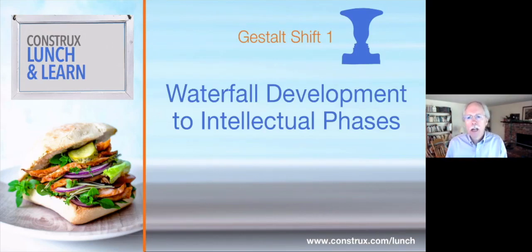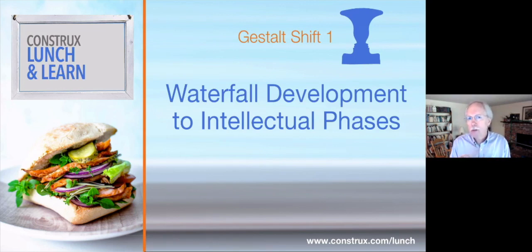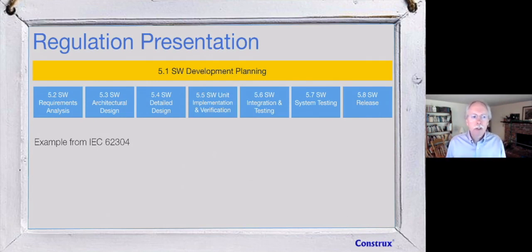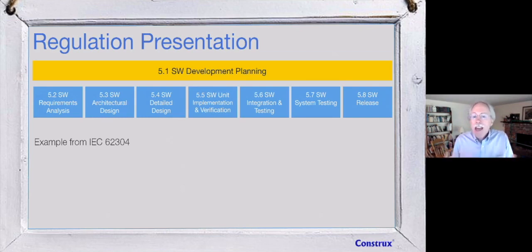Let's look at gestalt shift number one. The gestalt shift is looking at the same reality but seeing it slightly differently. The idea is: do we really see waterfall development in our regulations? Can we make a gestalt shift to seeing intellectual phases? I'm using IEC 62304 as an example. This regulation is presented with a whole overall planning diagram listing all the work that has to get done, with equal-sized numbered boxes — 5.2, 5.3, 5.4, 5.5 and so on.